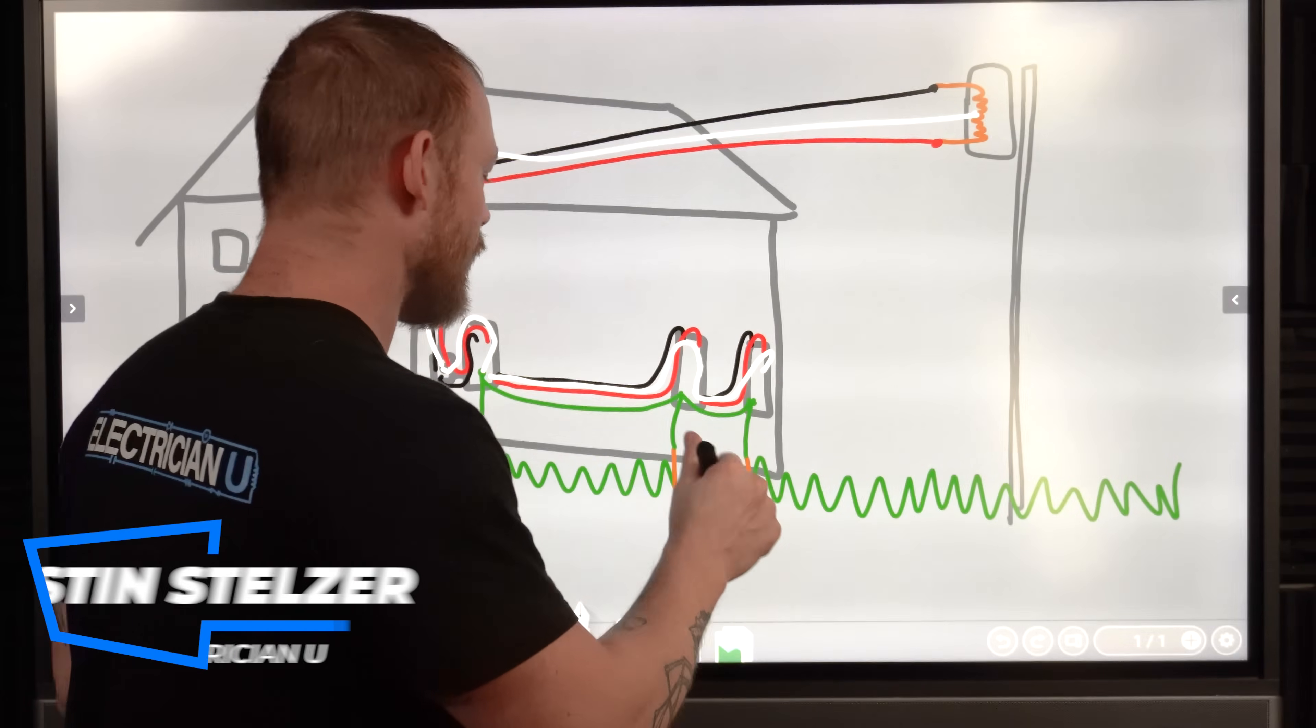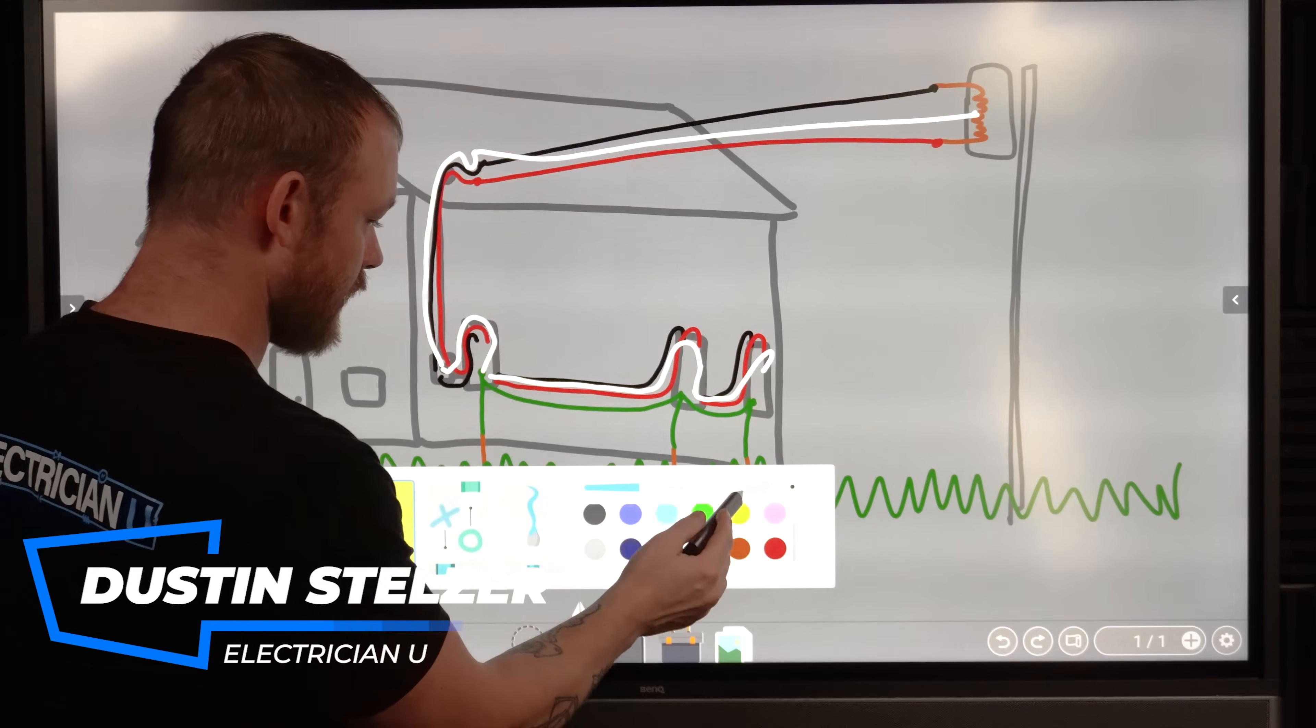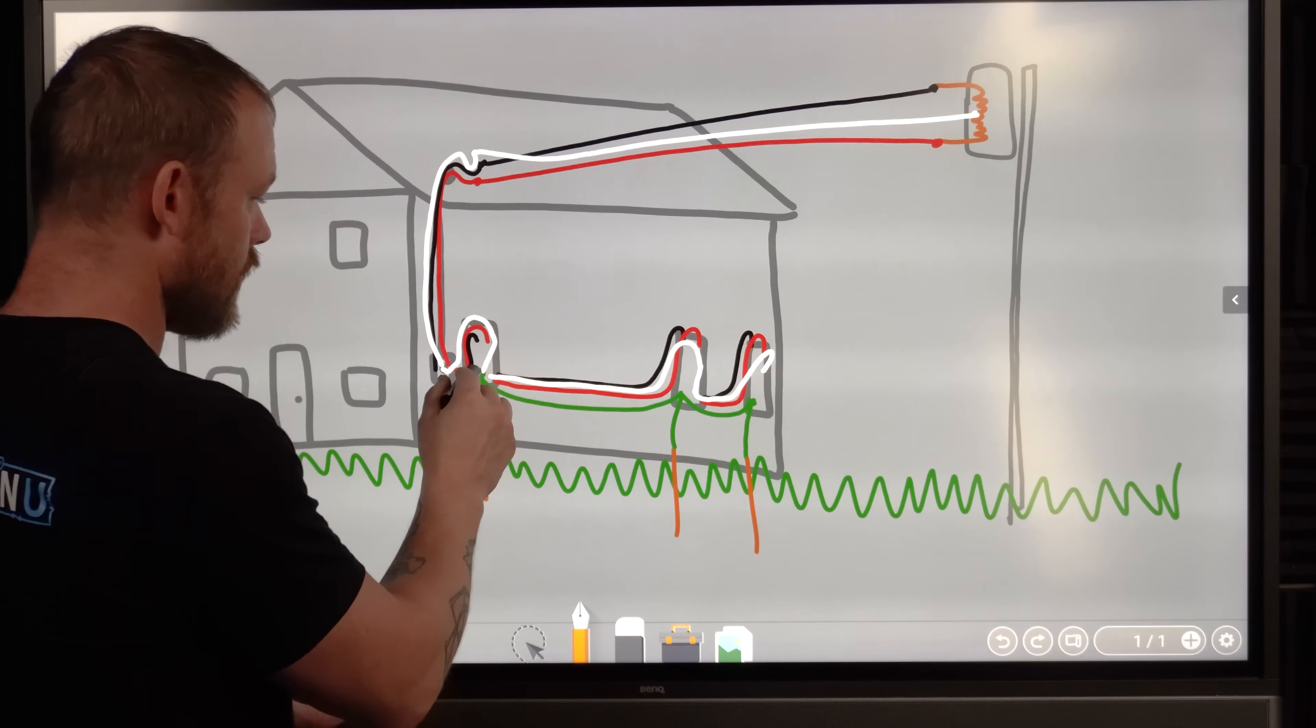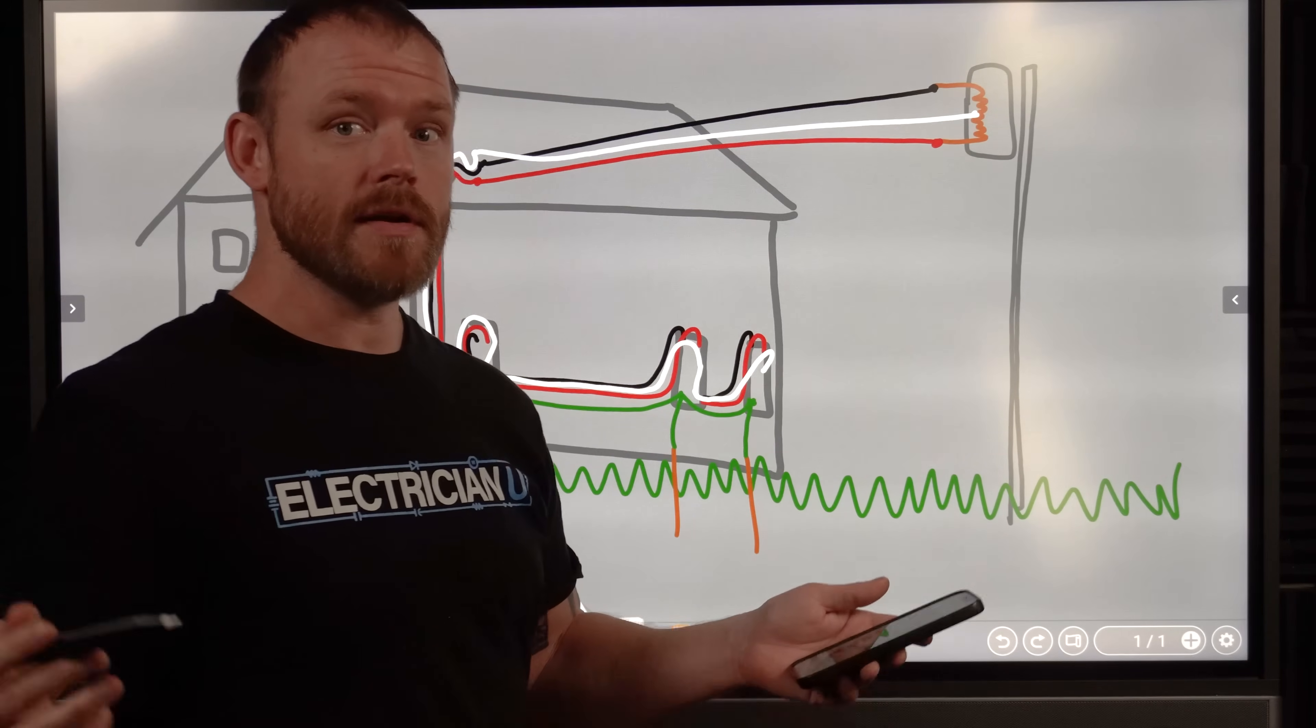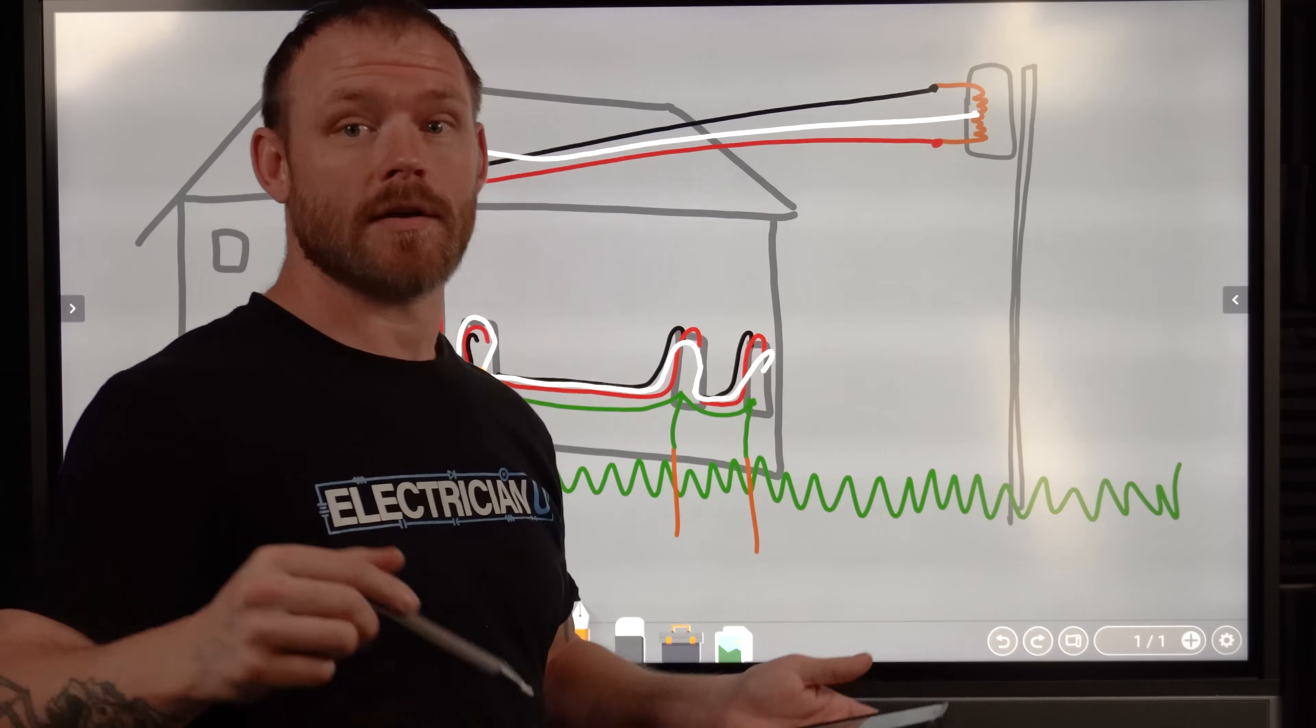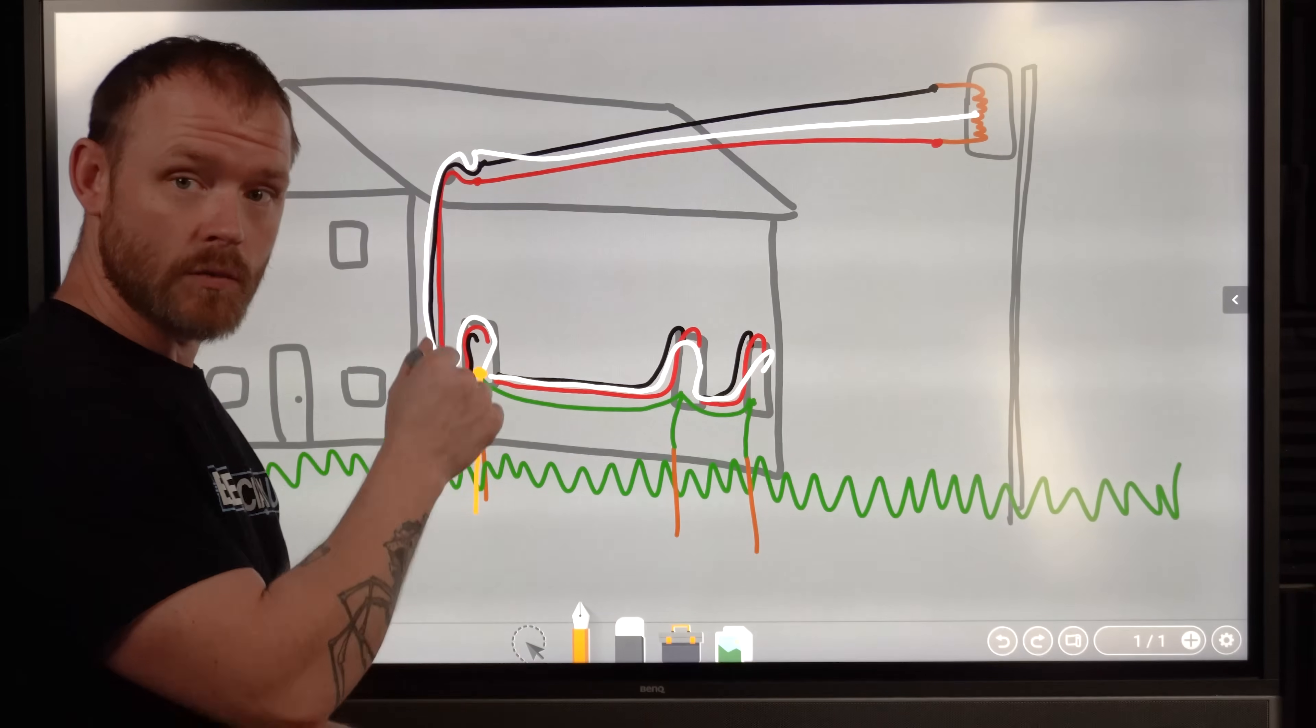So if you recall from that video, I talk about actually bonding our neutrals and our grounds together. Let me get a different color on here. So the point at which our ground rod hits earth, it could be a concrete encased electrode, it could be a ground rod, ground ring. There's all kinds of different things that we can use to establish our connection with earth.